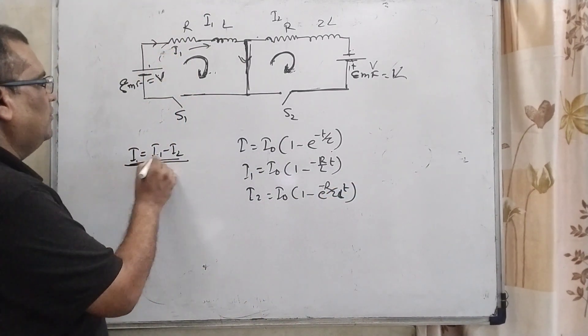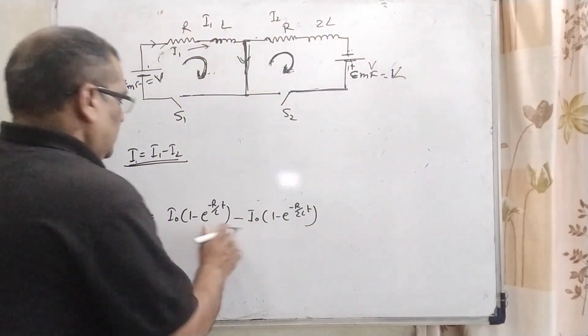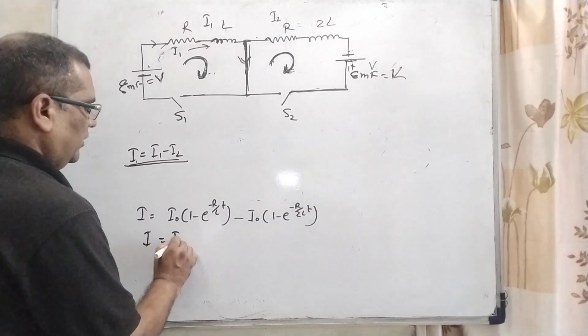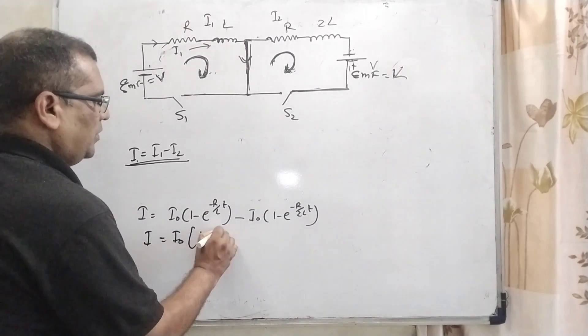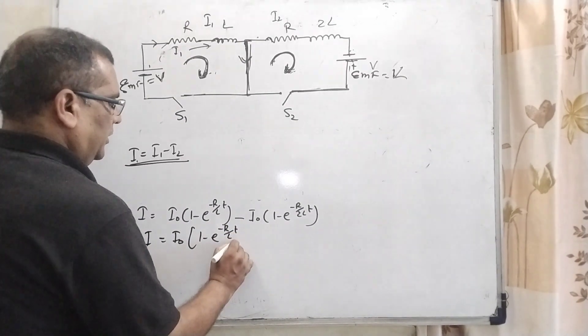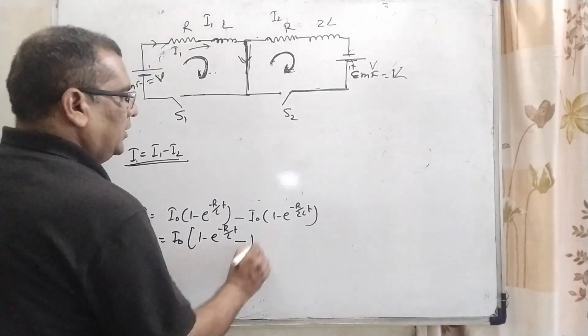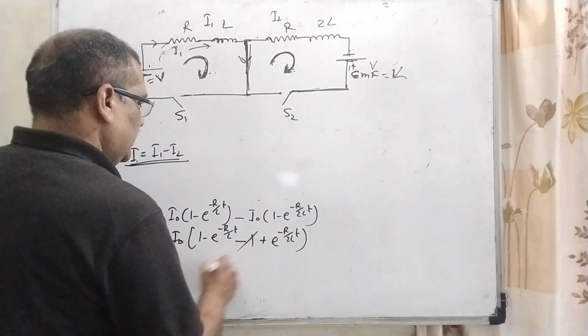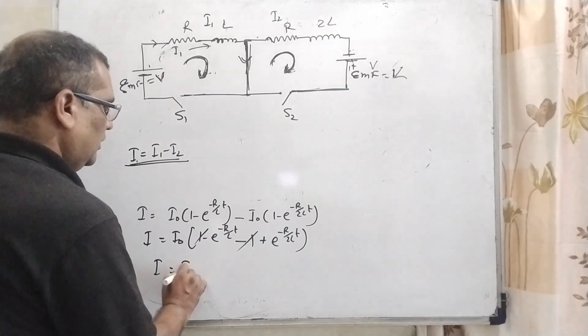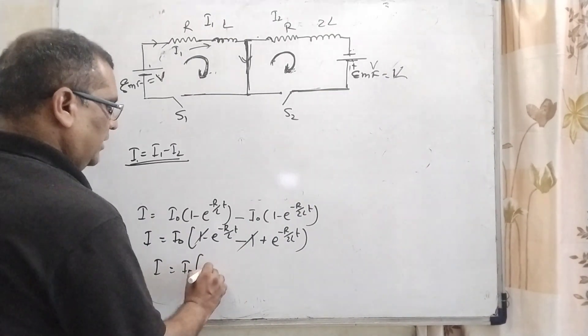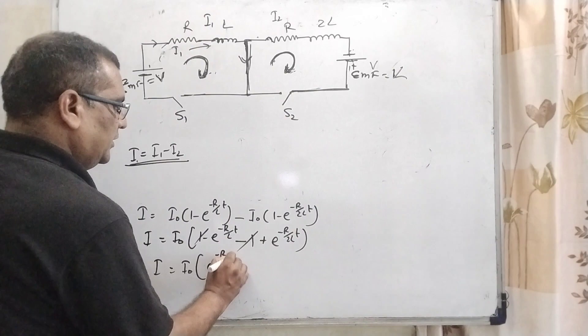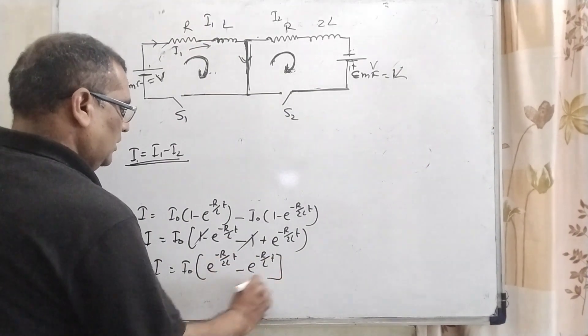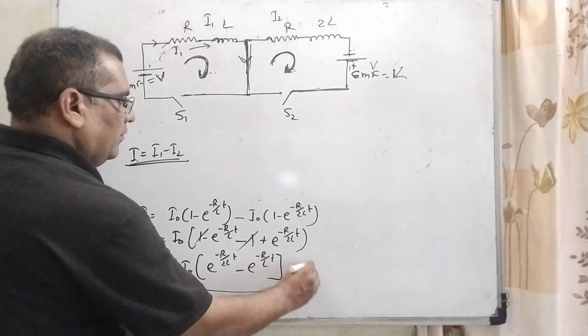By using Kirchhoff law, I equal to I1 minus I2. Then I equal to I0 times 1 minus E raised to power minus R by L T minus 1 minus E raised to power minus R by 2L into T, which becomes E raised to power minus R by 2L T minus E raised to power minus R by L T. This is the first equation.